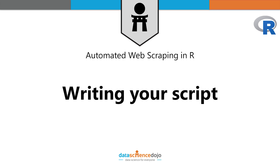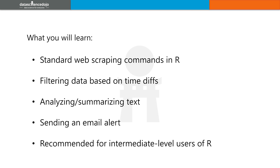As fun as it is to do an academic exercise of web scraping for one-off analysis, it's not useful when wanting to use timely or frequently updated data. So I'll take you through the process of writing standard web scraping commands in R, filtering timely data based on time diffs, analyzing and summarizing key information in the text, and sending an email alert of the results. Then in part two I'll show you how to automate running your script every hour so you can run this in the background and free yourself to work on more interesting tasks.